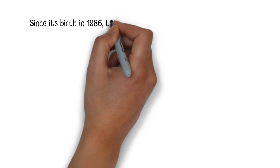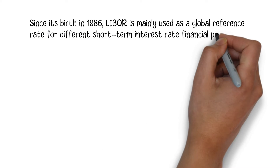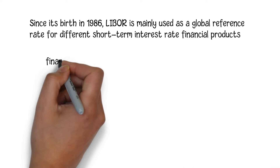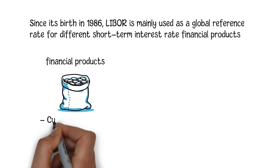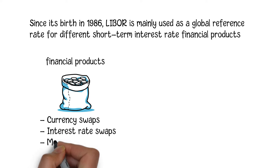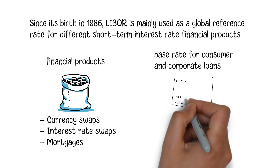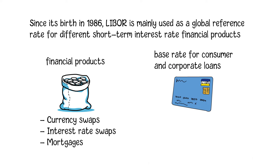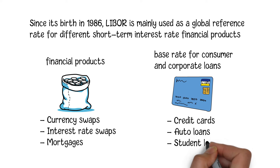Since its birth in 1986, LIBOR is mainly used as a global reference rate for different short-term interest rate financial products, such as currency swaps, interest rate swaps, and mortgages. Many banks worldwide use LIBOR as a base rate for setting interest rates on consumer and corporate loans such as credit cards, auto, student, and home loans.